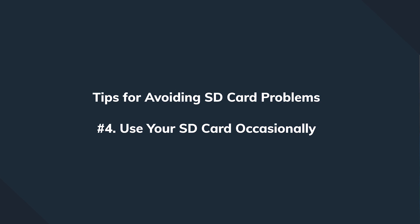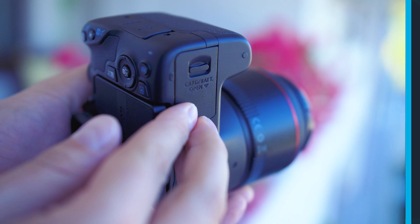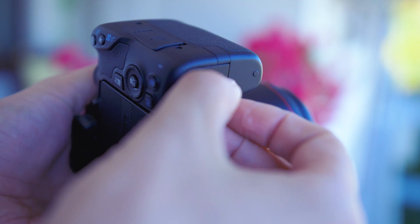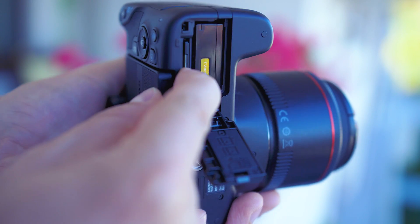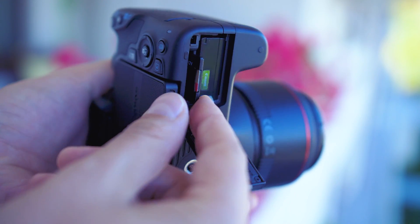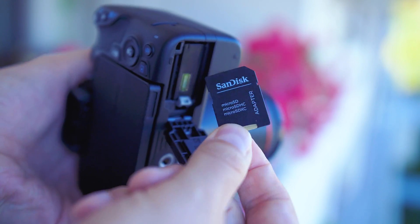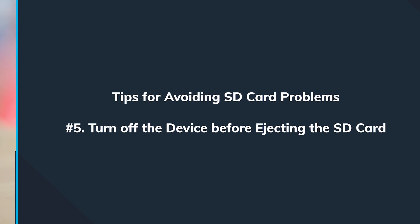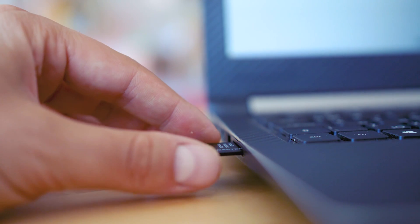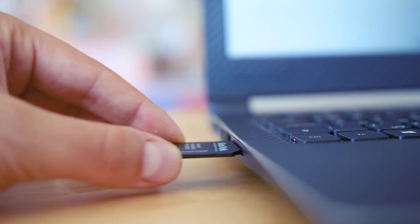Read your card occasionally — you should keep your SD card in use often. As it is made of electronic components, it will get damp if you don't use it for a long time. And the last tip is to switch off the device before removing the card.